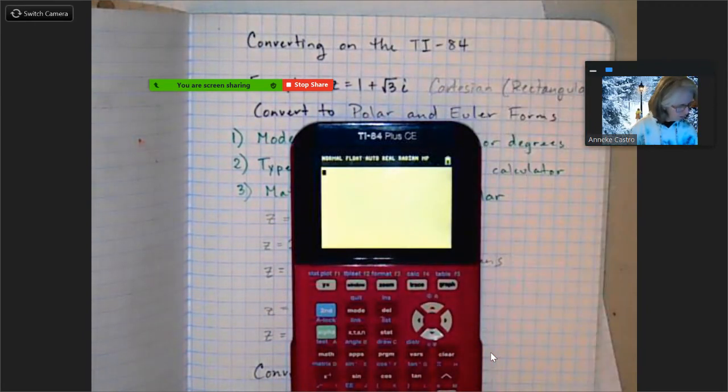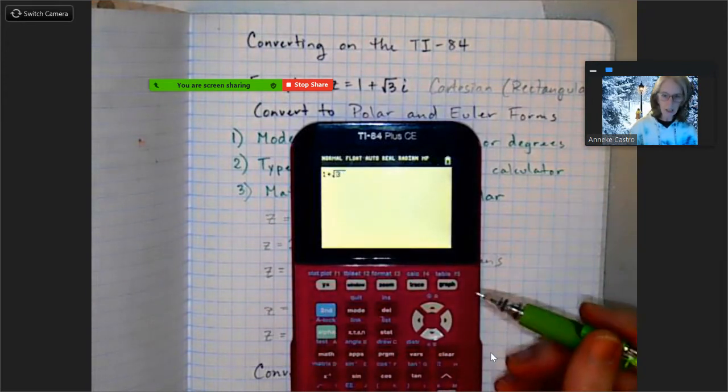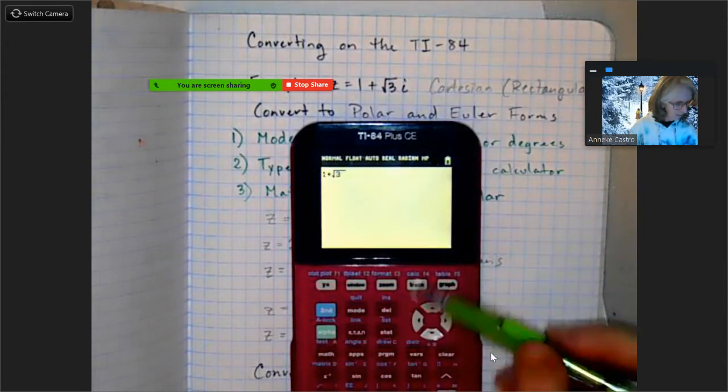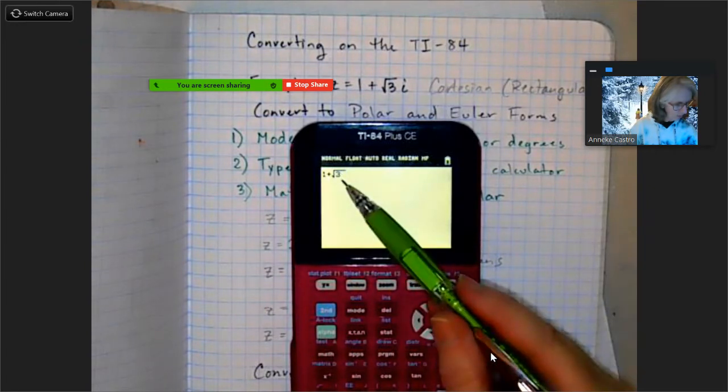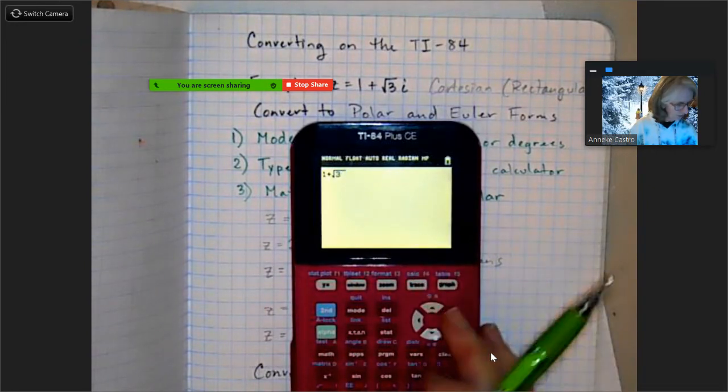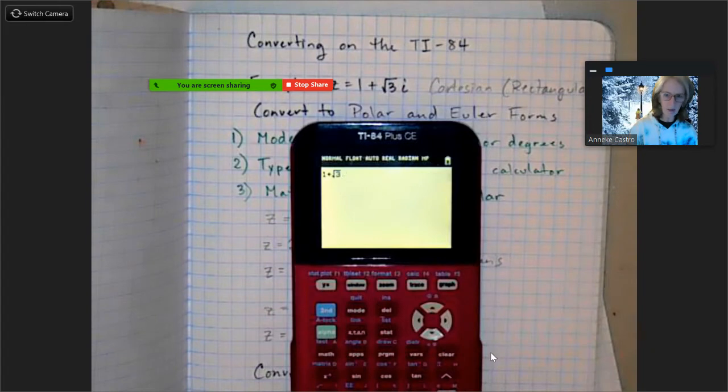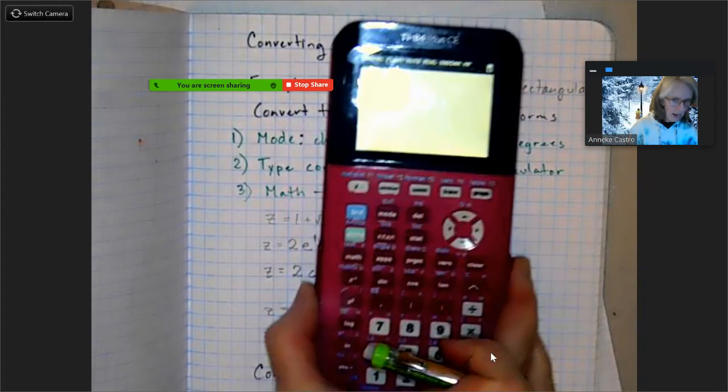Now I'm going to type in my rectangular form: 1 plus square root of 3i. Be careful here when you're typing it in. If I type i right now it's going to be underneath the square root and I don't want it to be underneath the square root.